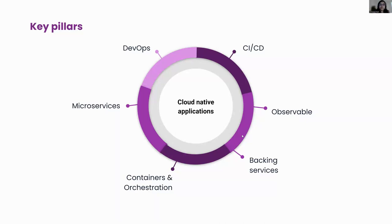While containers help you run your application, orchestration is what lets you manage them — especially important when running containers at scale. Cloud native systems are also powered by many other resources such as data stores, messaging queues, authentication, and caching — these are known as backing services. Observability is the ability to observe or monitor an application and respond to failures, or proactively prevent failures and downtime, by monitoring metrics and signals from the application. This is very important when we talk about cloud native.